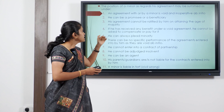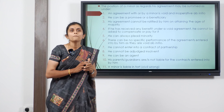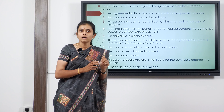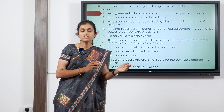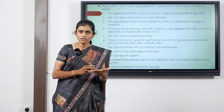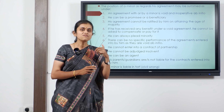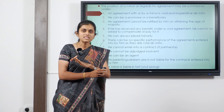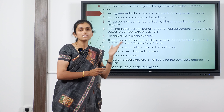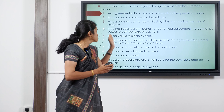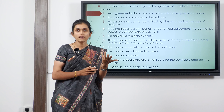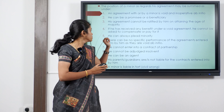Fifth, a minor can always plead minority. If a minor misrepresents himself to be a major and enters into a contract — say he is 15 years old but claims to be 18 — and subsequently fails to perform his promise, the promisee cannot sue him even if he committed misrepresentation. It is the promisee's responsibility to be aware of such acts.